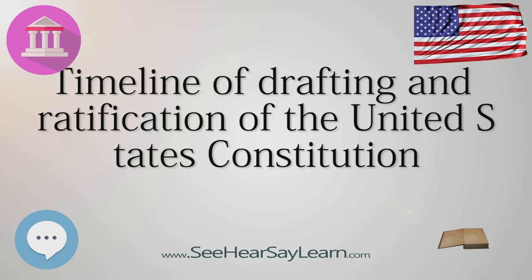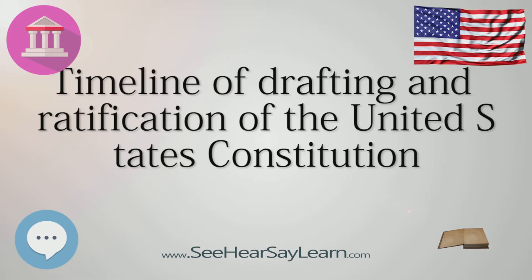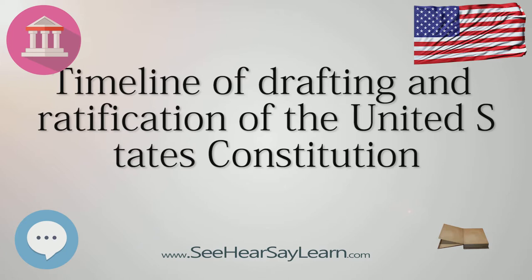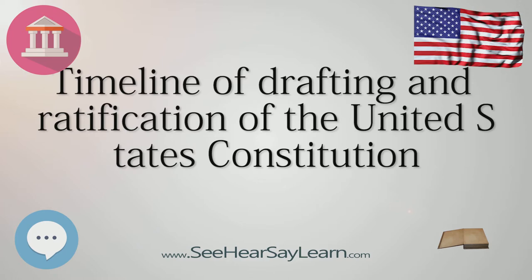September 13: The Congress of the Confederation certifies that the new Constitution has been duly ratified and sets the date for the first meeting of the new federal government and the presidential election. December 15, 1788 to January 10, 1789: The first quadrennial presidential election under the new Constitution is held.